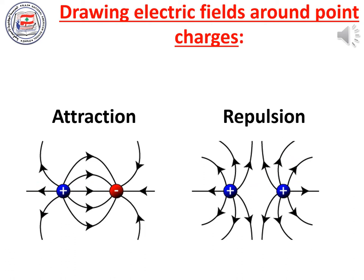We should also know how to draw electric fields around point charges when they are near each other. We have two cases: attraction or repulsion. Attraction is when we have two different charges near each other — positive and negative. The field lines are connected; they go out from the positive charge and into the negative charge. However, when there is repulsion — two same charges near each other, positive or negative — you should draw the electric field lines repelling from each other, moving away, as shown in the figure to the right. For two negative charges, the arrows will be going into the negative charge.